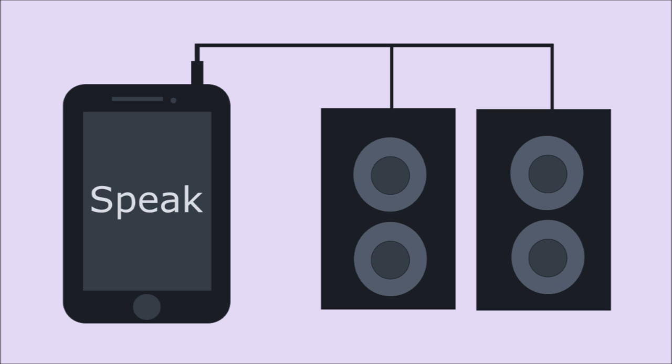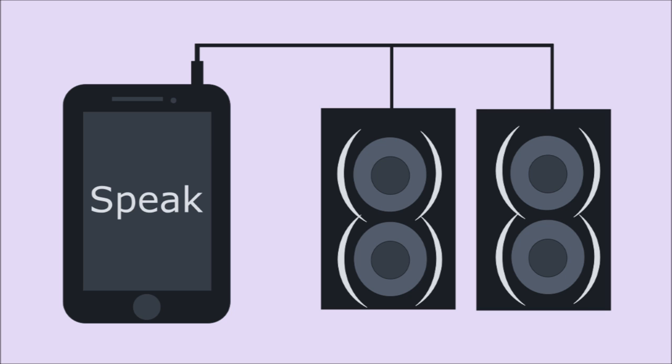If you want to use your phone as a microphone, here is an Android app called Announcement Light which helps you convert your smartphone into a microphone. You just need to download this app from Google Play, then connect your smartphone to loudspeakers, and whatever you speak will be announced to the speakers loudly. It acts like a microphone. It is free on Google Play, so get it now.